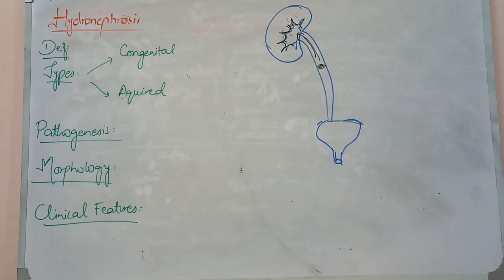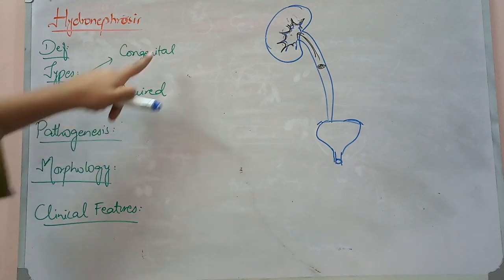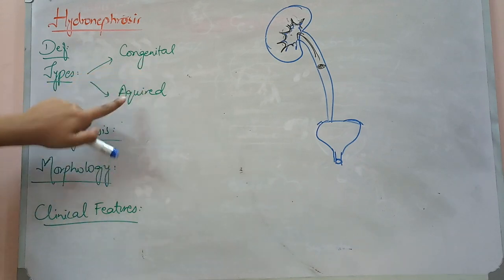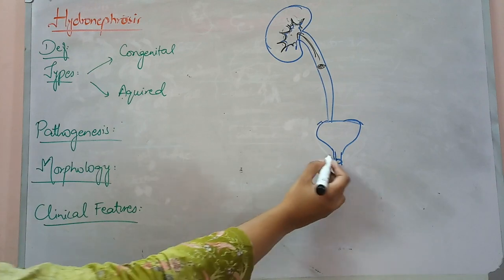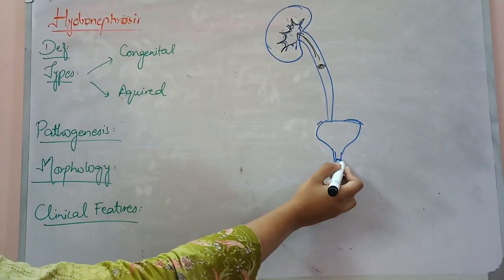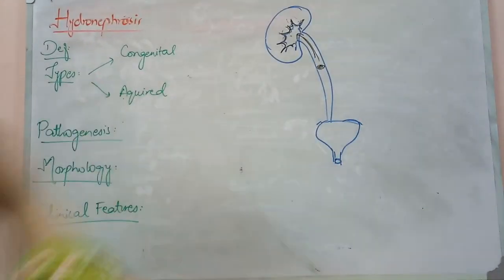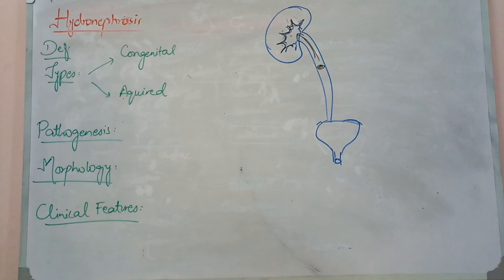What are the reasons for hydronephrosis? It can be a congenital reason, or it may be acquired. For congenital reasons, suppose the urethra was malformed — it was stenosed or closed. Because it doesn't open, urine will not pass and there will be a pressure increase.